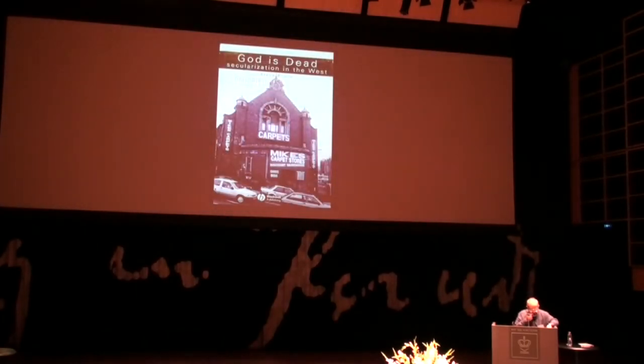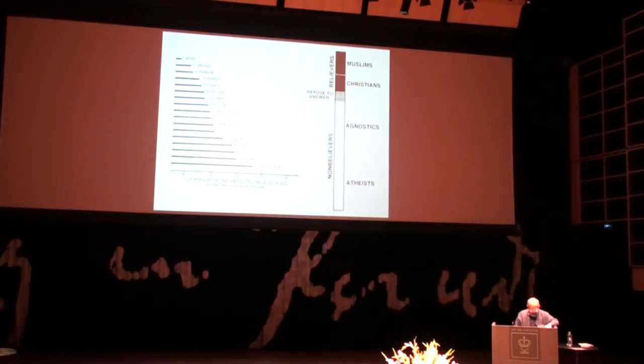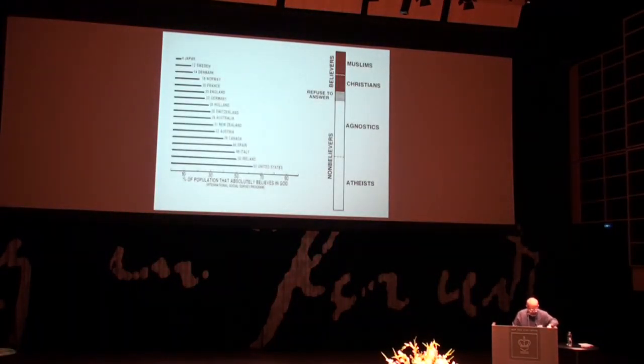And then of course there's Europe. This is a very important book by Steve Bruce that came out a few years ago, God is Dead, shows a typical European church having been converted into another use. I highly recommend this book. On the left is data from the International Social Survey program taken about 10 years ago, showing absolute belief in God in the first world democracies. The United States is the highest at about two-thirds, but even there notice that a third aren't absolute believers. On the other hand is Japan, it's only a few percent, Sweden and Denmark in the teens. So tremendous variation in the level of belief in the gods.